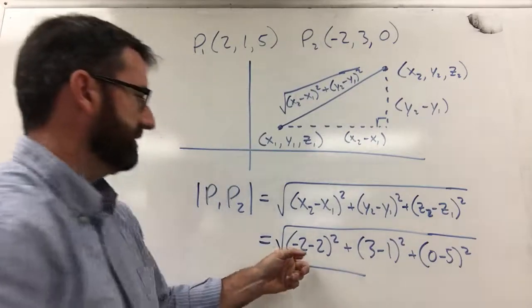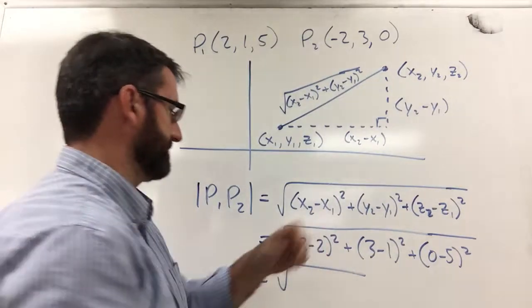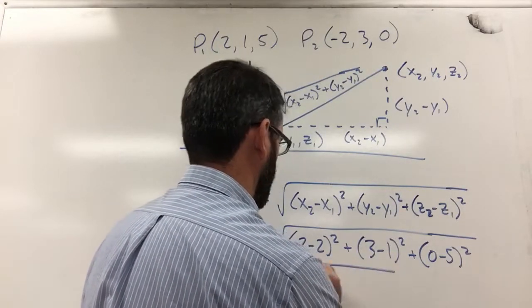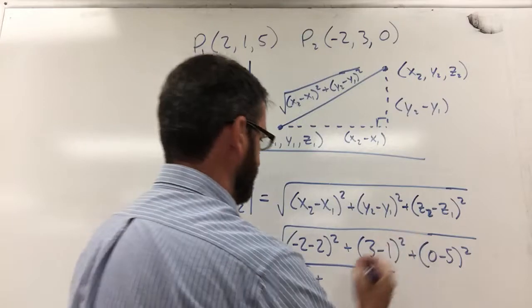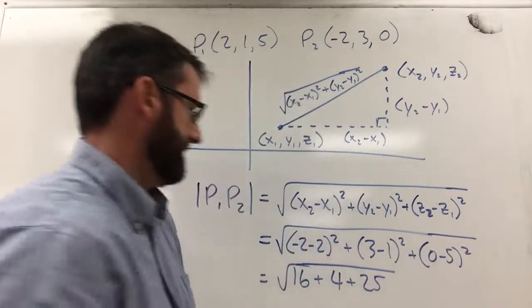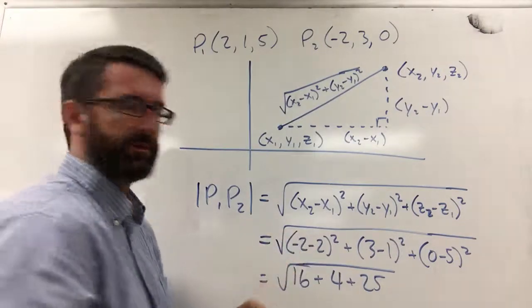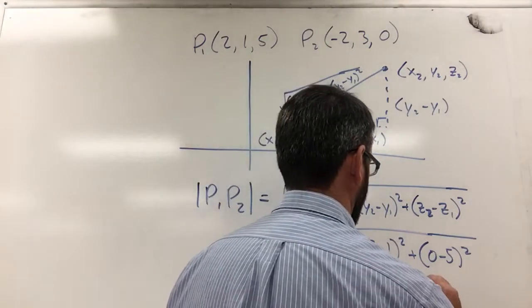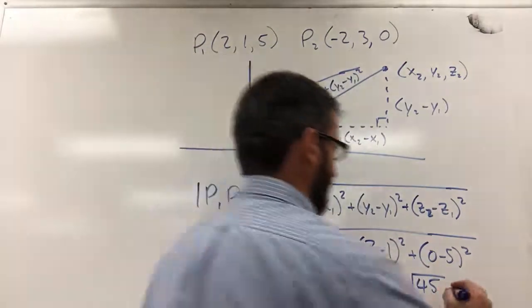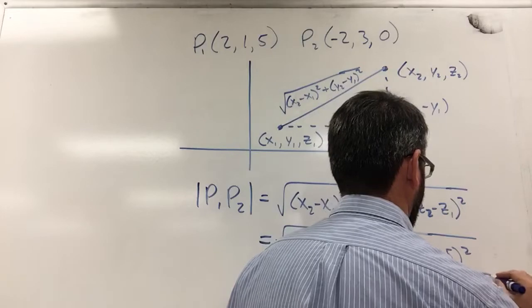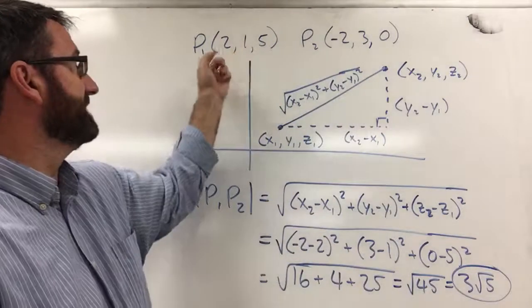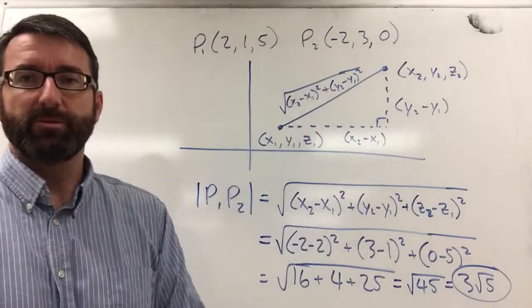So that's the square root of -2 minus 2 is -4, squared is 16. 3 minus 1 is 2, squared is 4. And -5 squared is 25. 16 plus 4 plus 25 is equal to 45. So this is the square root of 45, which we can write as 3√5. And so that 3√5 is going to be the distance between those two points.